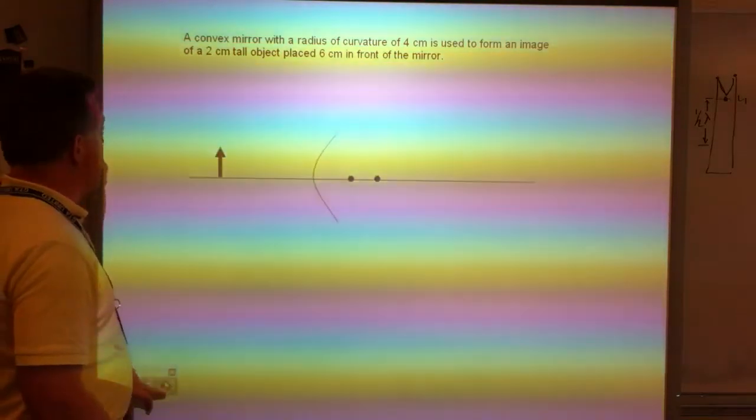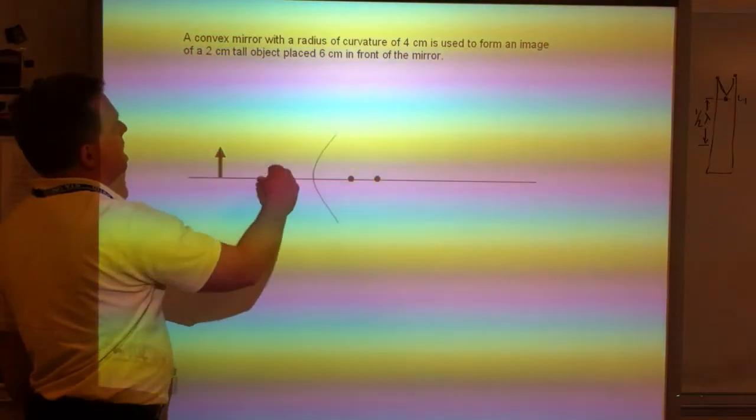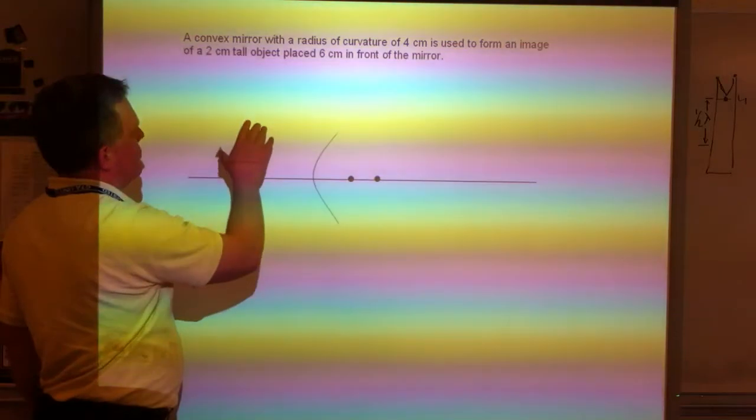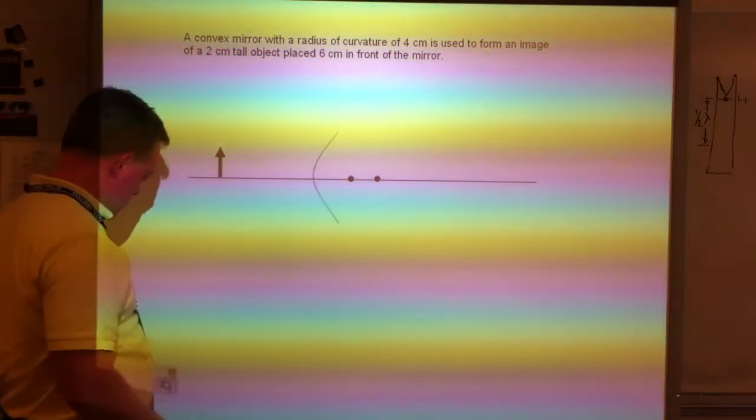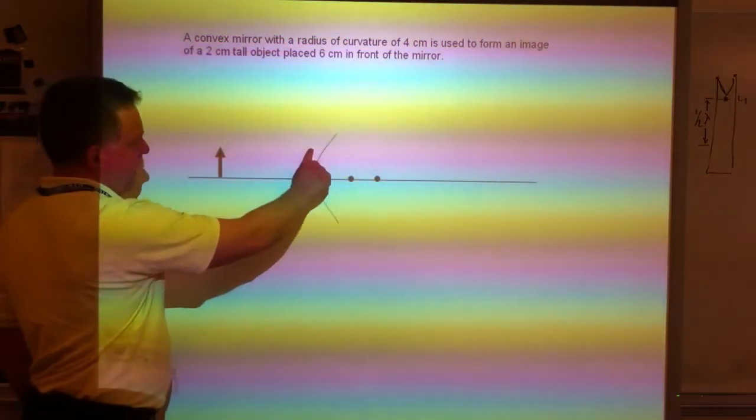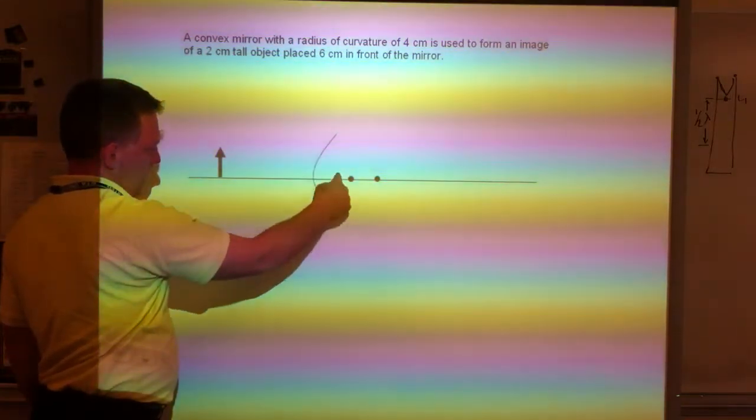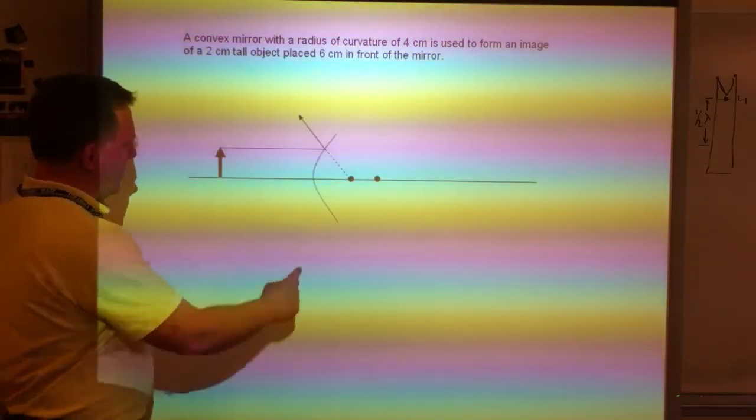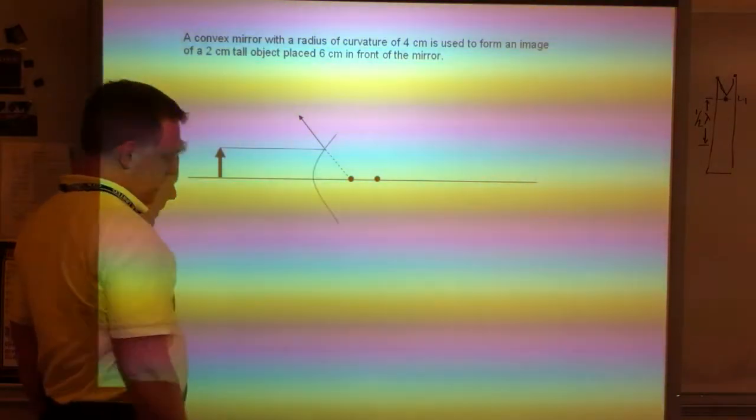Our example here is I have a convex mirror going out towards my object. It has a radius of curvature of 4, forming an image of a 2-centimeter tall object placed 6 centimeters in front of the object. When I do my ray diagram, it's kind of the same. I draw in a parallel ray, and then it's going to go away from that focus. Since it never gets behind the mirror, anything behind the mirror I'm going to do with a dotted line. It goes in parallel and goes directly away from this first focus.